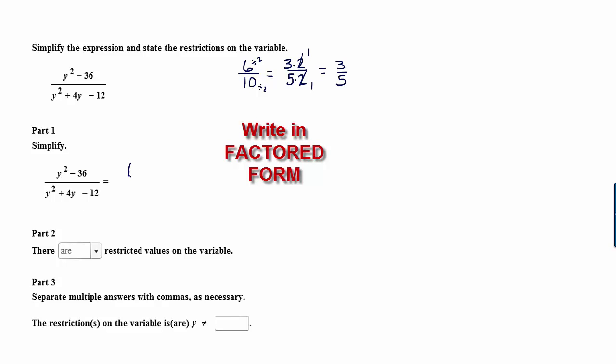Y squared minus 36 fits the pattern of a difference of squares. So it factors into conjugates: y minus 6 times y plus 6. Y squared plus 4y minus 12 is a trinomial. The leading coefficient is 1, so all we need to do is look at the negative 12. We're looking for factors of negative 12 that add up to 4.